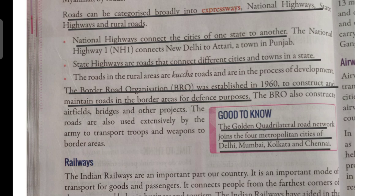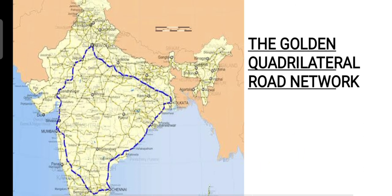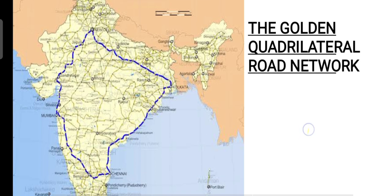The Golden Quadrilateral road network joins the four metropolitan cities of Delhi, Mumbai, Kolkata and Chennai. As you can see, the blue line on the map shows this quadrilateral connecting these four major cities.